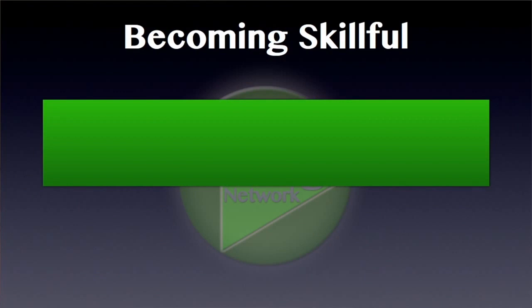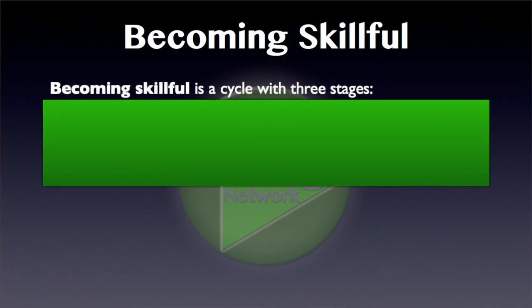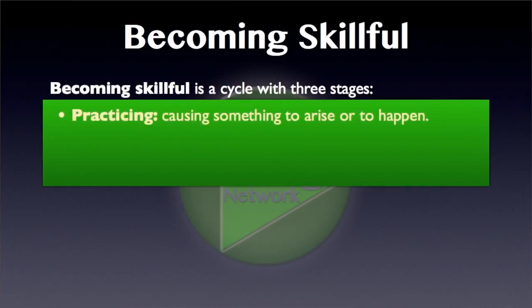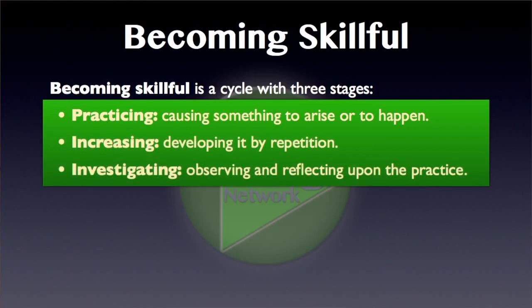Let's review a few things about becoming skillful. The process of becoming skillful is a cycle with three stages: practicing — causing something to arise or happen, in other words doing something; increasing — developing it by repetition; and finally investigating — observing and reflecting upon the practice. For example, if I'm playing music, I'll take my instrument and make a tone, a scale, a chord, or play a song. Then I'll play it again and again. And finally I'll sit down and reflect: is that good enough? Is that really what I want? Am I saying what I'm trying to say with this performance? Do I want to adjust things, change the harmony, change the tempo? These are the questions you ask yourself when you're investigating.